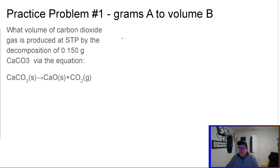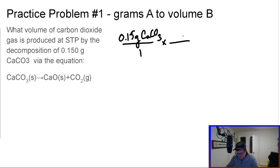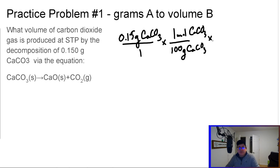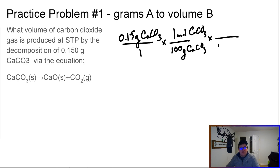We need to convert that into moles because we can't go straight from grams to volume. So let's start with 0.15 grams of calcium carbonate. The molar mass is 100 grams per mole of CaCO3 — I found that by adding up all the molar masses from the periodic table. This gives us how many moles we have, but we want liters, so we're not quite done yet. We need to go from moles of calcium carbonate to moles of CO2.